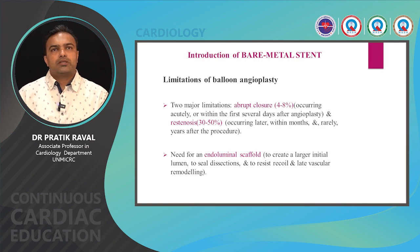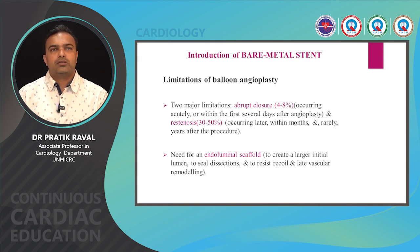Balloon angioplasty was effective in opening up the lesion, but it had two major limitations: abrupt closure, which usually occurred acutely or within a few days after the procedure, and restenosis, which occurred in as high as 30 to 50% of cases during the initial 6 to 12 months. Hence, the need for an endoluminal scaffold to create a larger initial lumen, seal dissections, and resist recoil and late vascular remodeling was perceived.